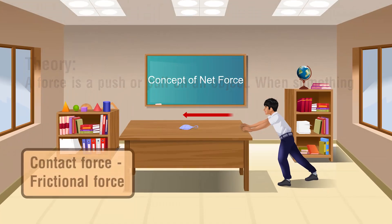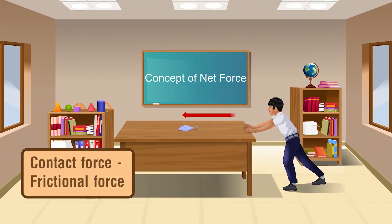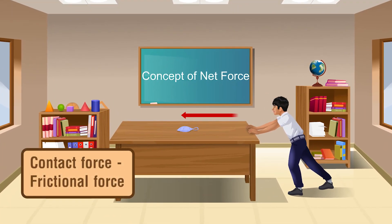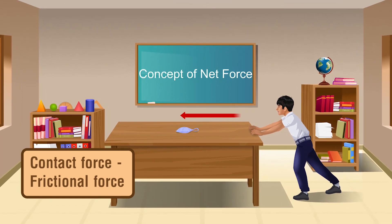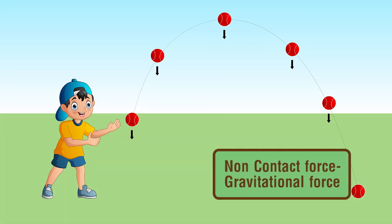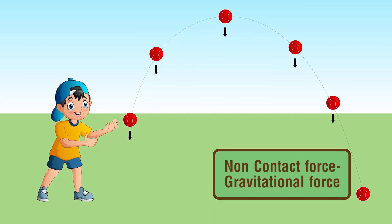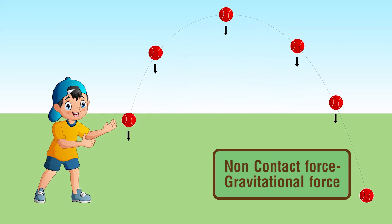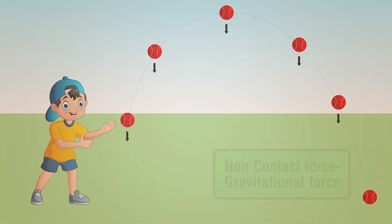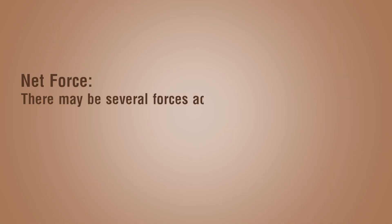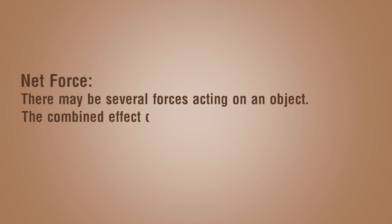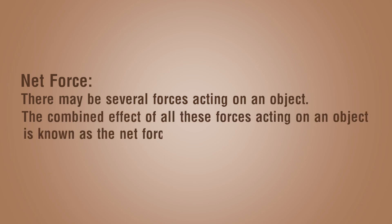There are two types of forces. Contact forces happen when objects touch each other. Non-contact forces are forces that act between two objects at a distance. Net force: there may be several forces acting on an object, and the combined effect of all these forces acting on an object is known as the net force.